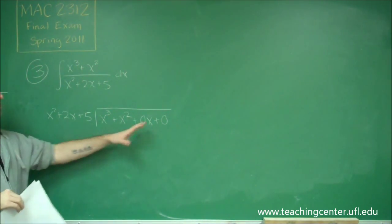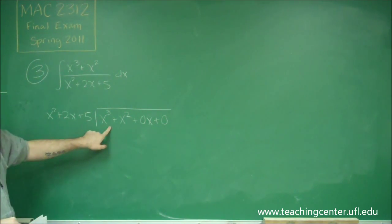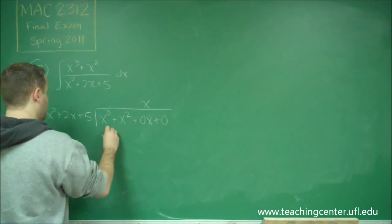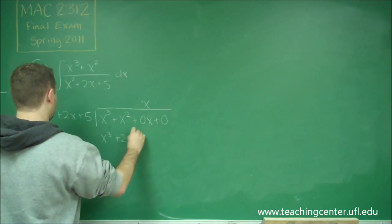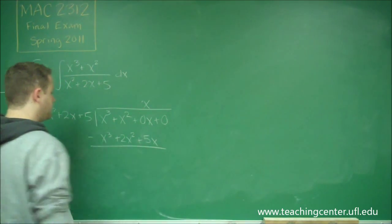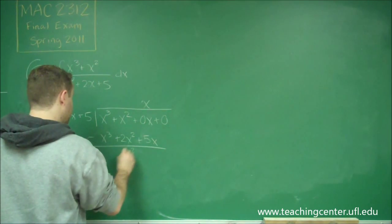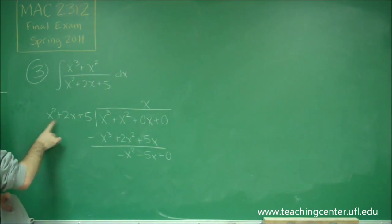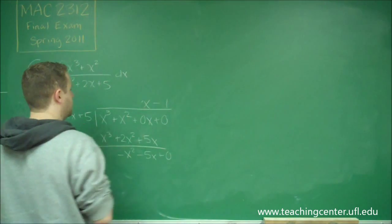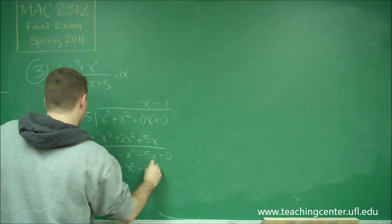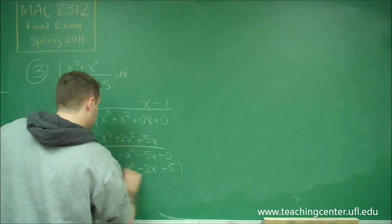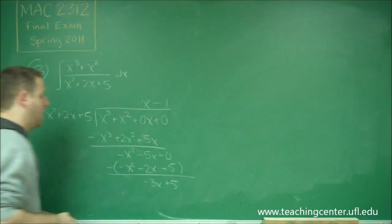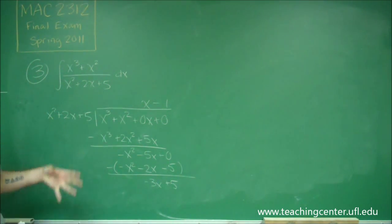To make it simpler, line everything up and check how many times x squared goes into x cubed — that would be x. When you multiply through, you get x cubed plus 2x squared plus 5x, and then you subtract. So we get negative x squared minus 5x, bring down the plus zero. How many times does x squared go into negative x squared? That would be minus 1. Multiply through and subtract.